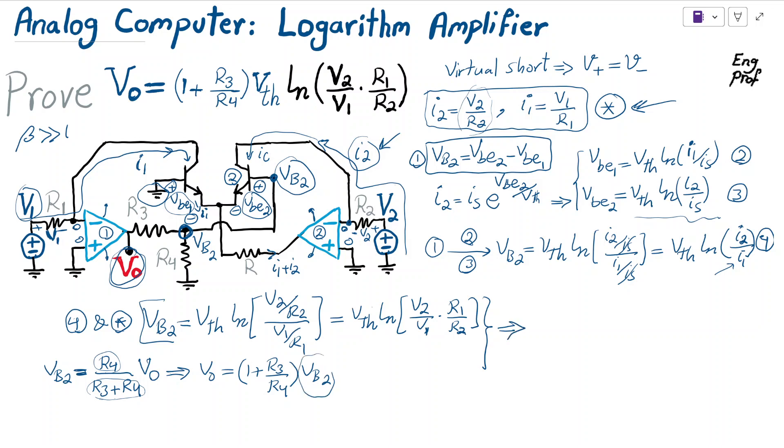From these equations, by substituting for VB2, we can say Vout equals 1 plus R3 over R4 times V threshold times ln of V2 over V1 times R1 over R2. That's exactly what we were trying to find—the final outcome of interest. This shows how a simple combination of components can compute this result.